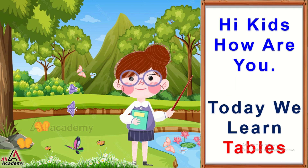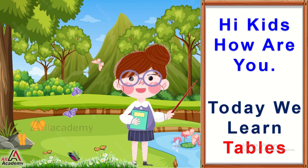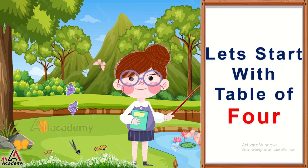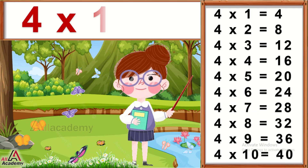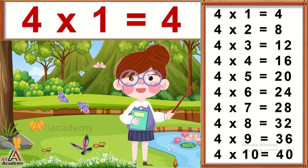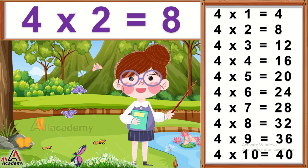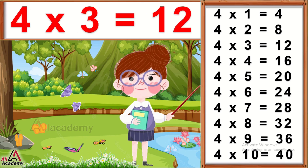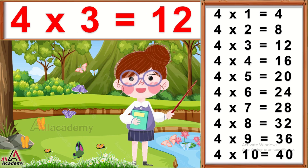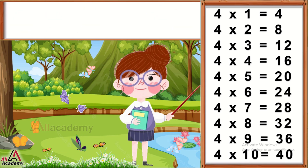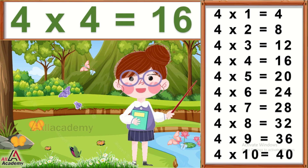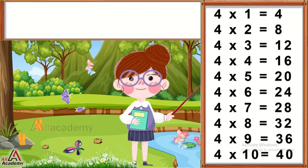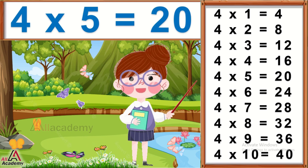Let's start with table of four. Four ones are four. Four twos are eight. Four threes are twelve. Four fours are sixteen. Four fives are twenty.